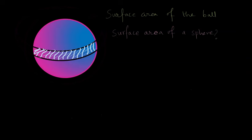How do we get the surface area of the sphere? Surface area of the sphere, let us call it S, is given as 4πr² where this r is basically the radius of this ball.